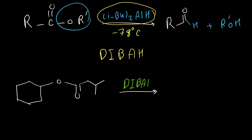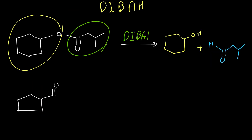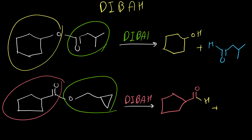Example with DIBAL-H: the carbonyl group converts to an aldehyde, and the other part converts to an alcohol — giving a cyclohexenol as the first product, and an aldehyde for the second product. Another example with DIBAL-H: the carbonyl part becomes an aldehyde, and the part with the single bond to oxygen converts to an alcohol (OH added to the rest of the structure).